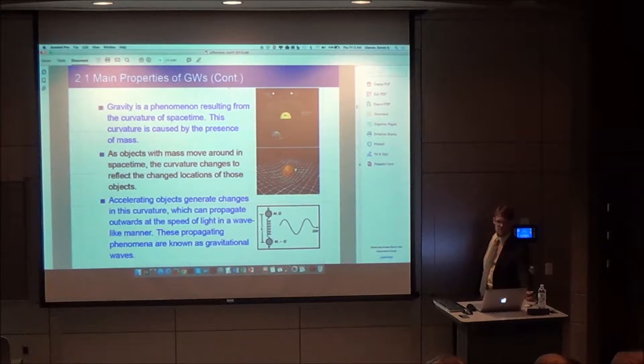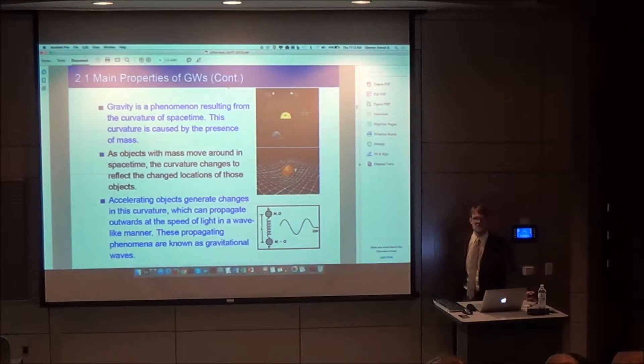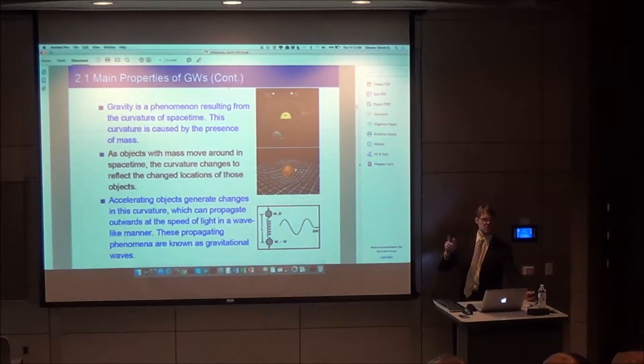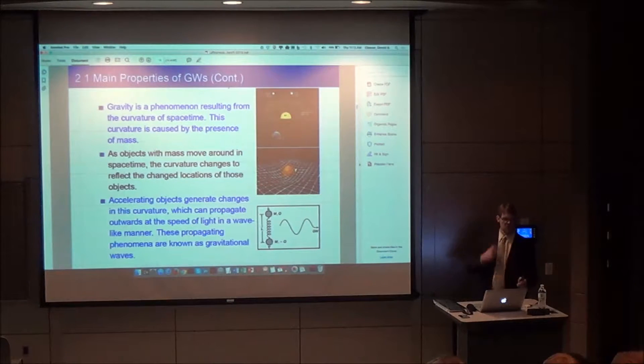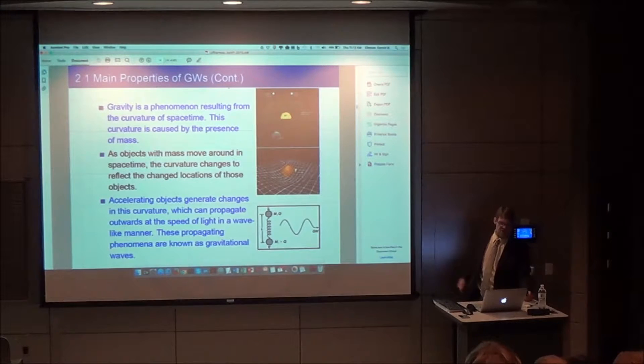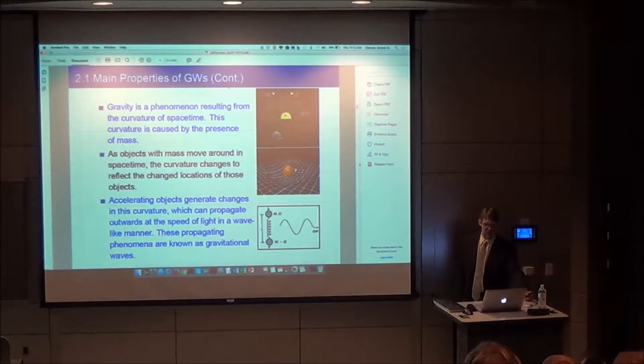Einstein modified Newton's description by showing that the force of gravity is propagated by gravitational waves. Accelerating objects generate changes in this curvature which can propagate outwards at the speed of light in a wave-like manner. Gravitational waves travel at the speed of light. If the sun exploded right now, we wouldn't see it for about eight minutes. The gravitational wave would hit us at the same time the observed explosion would.